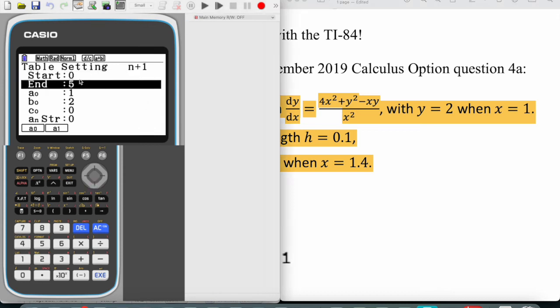We are going to tell the calculator that we are going to start at zero and end at five. We need to do this five times, and the first value of x is one.